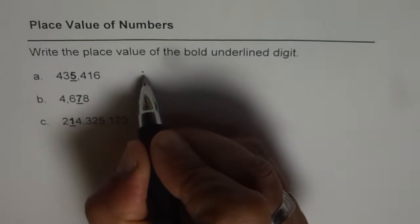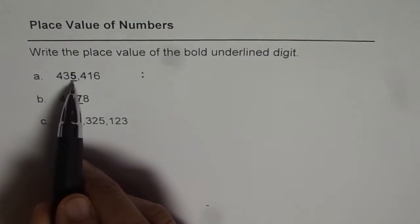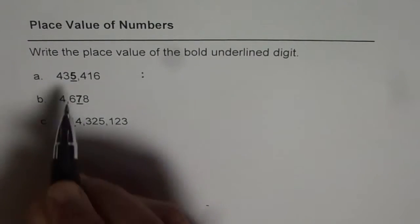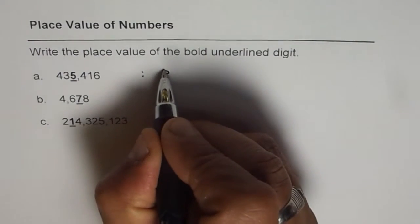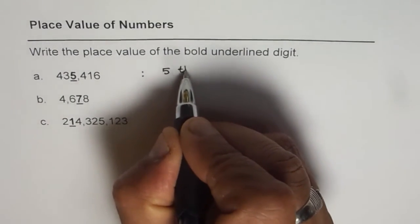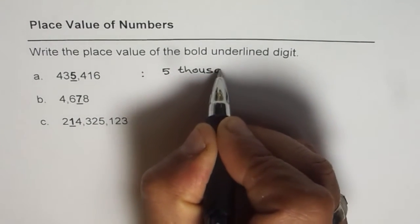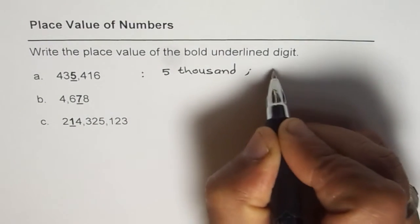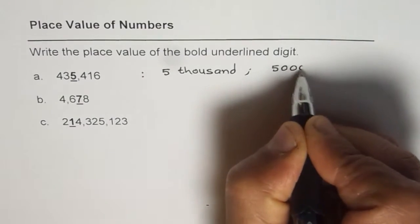Here is the answer for the first one. 5,000, right? So the place value is 5,000. You can write like this also, 5 and 3 zeros.